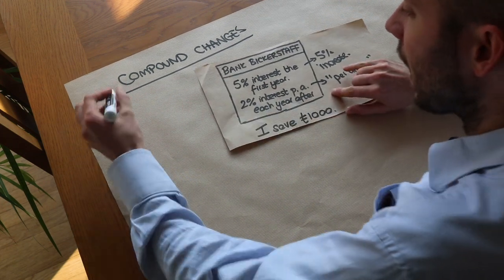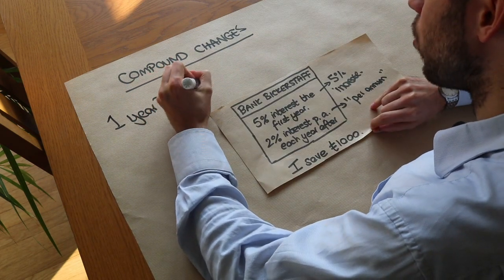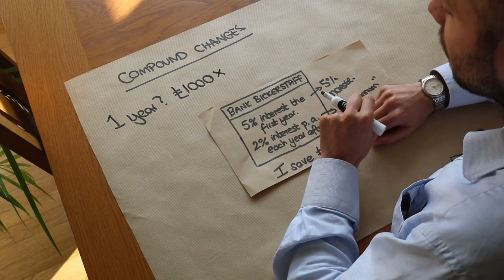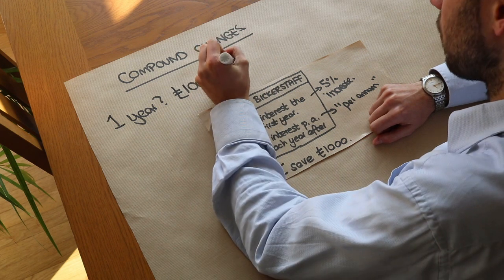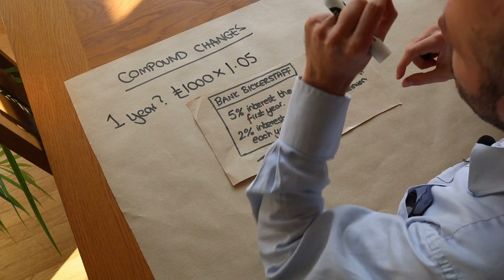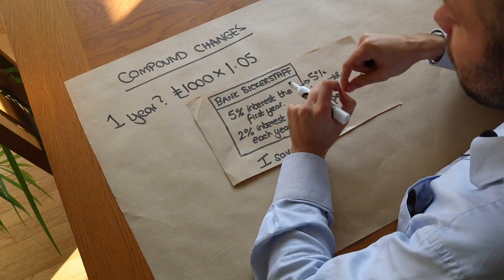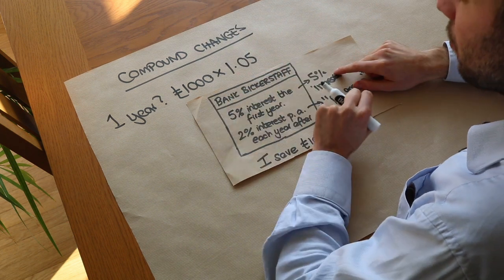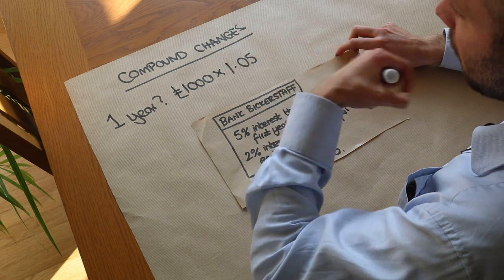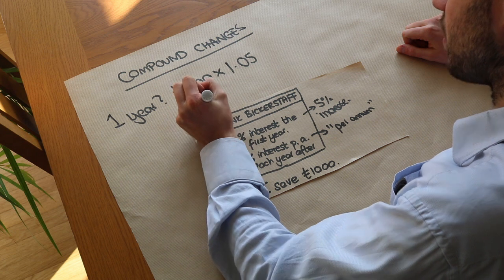So how much would we have after one year? We start with a thousand pounds and multiply by 1.05 to increase it by 5%. Remember, if something increases by 5% it goes from 100% up to 105%, and 105% as a decimal is 1.05 — that's the decimal multiplier. So we get a thousand and fifty pounds.